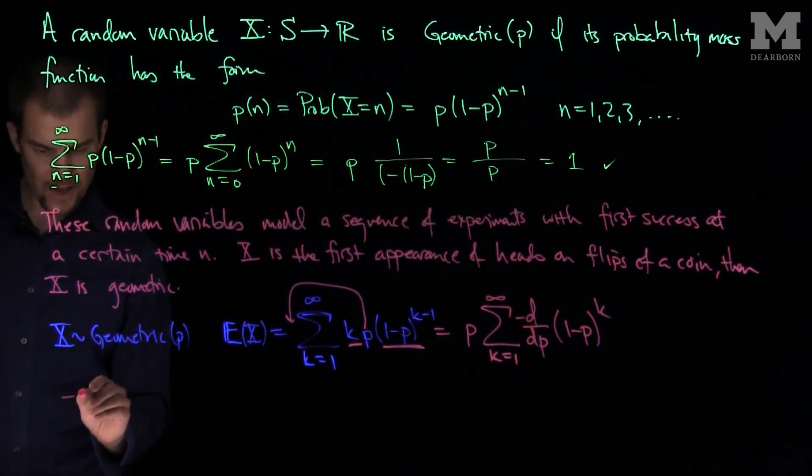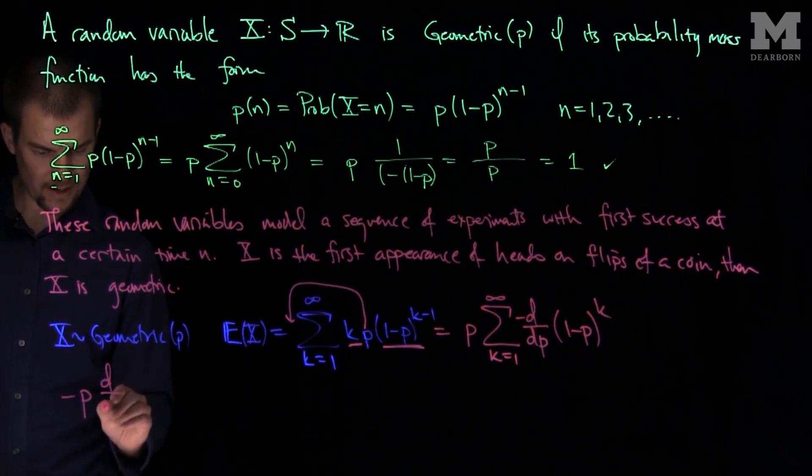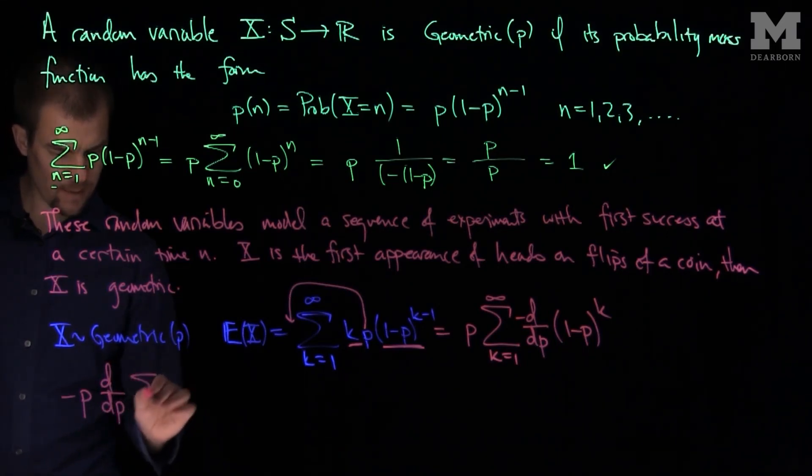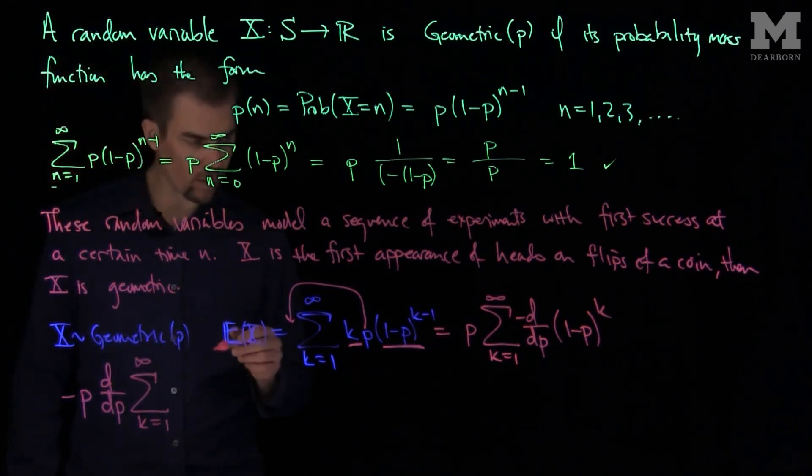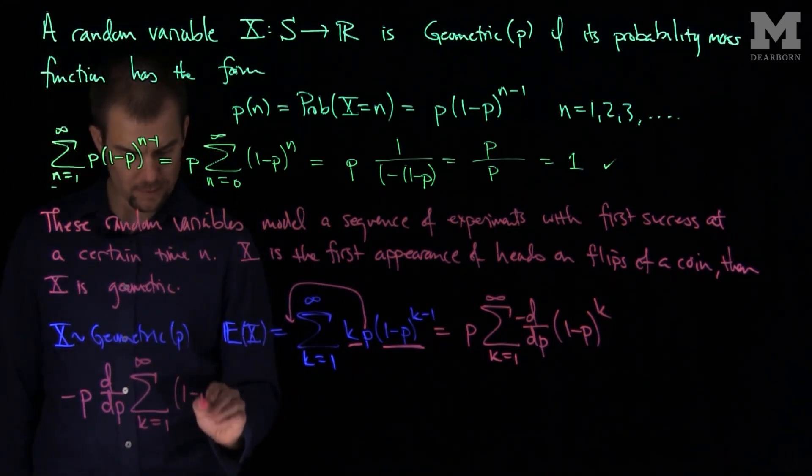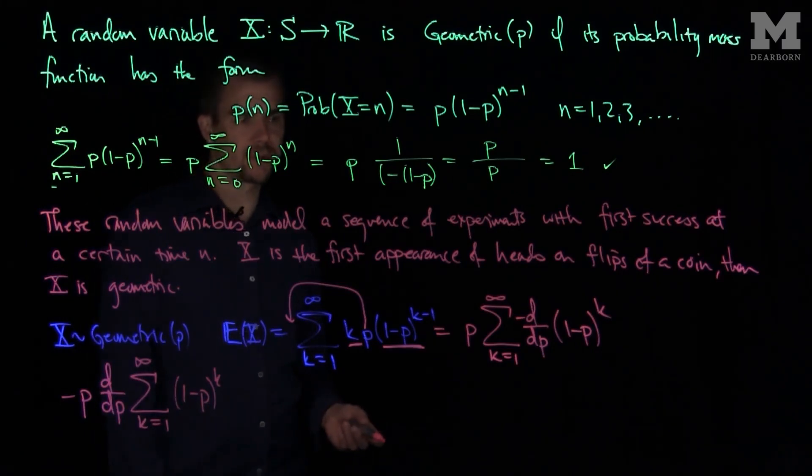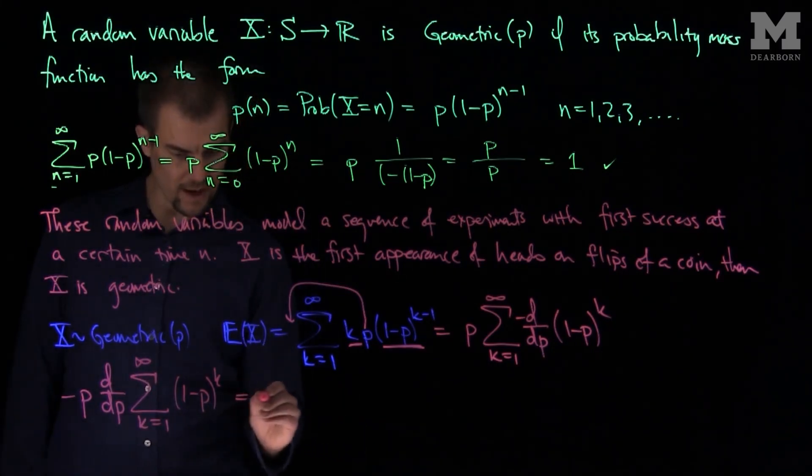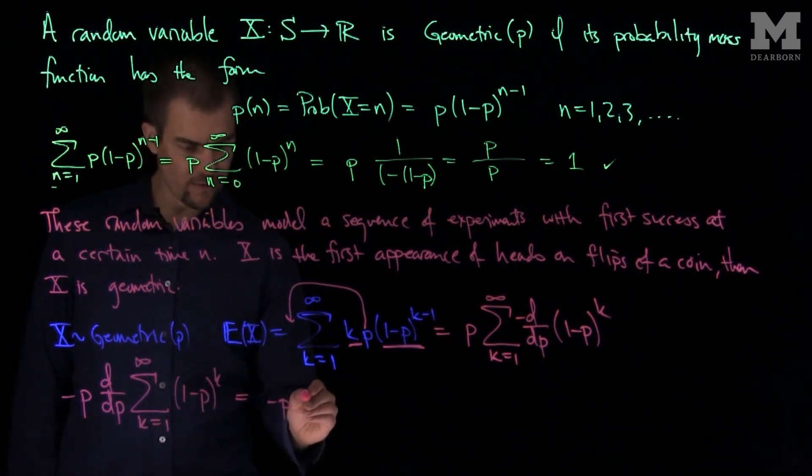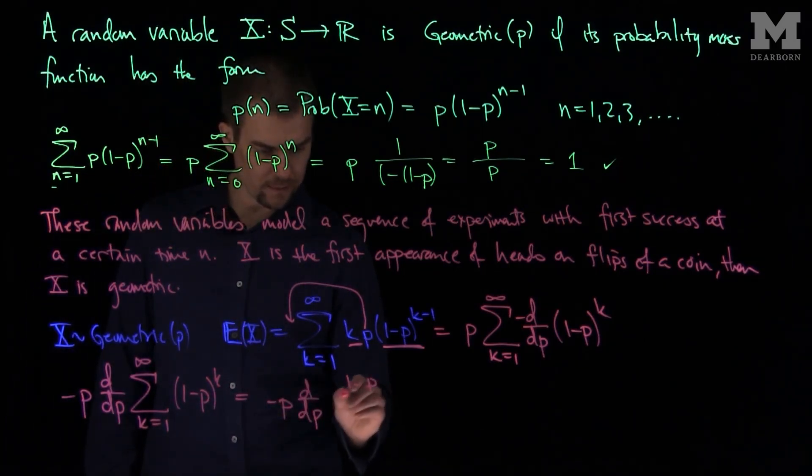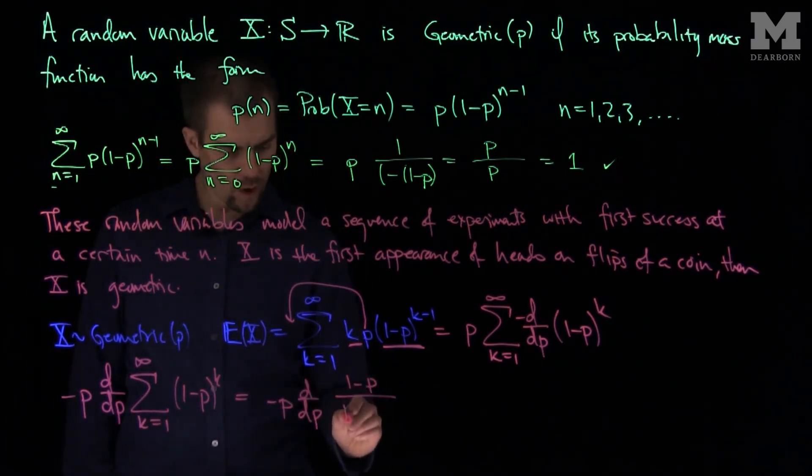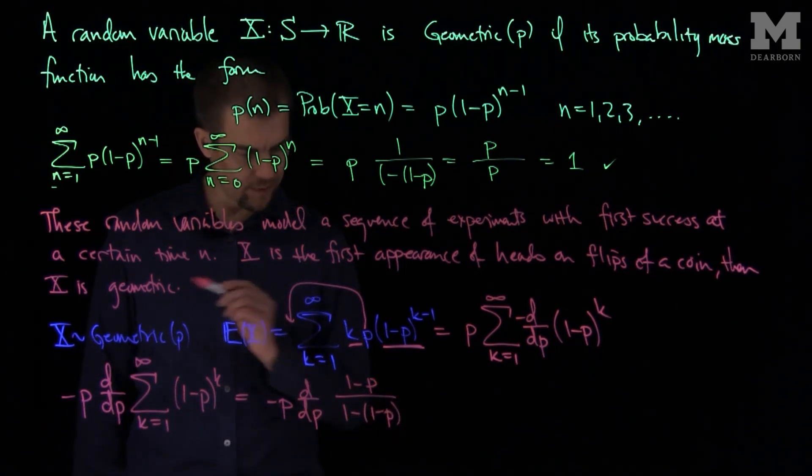And so we'll pull this derivative out of the sum. So this will be negative p, d by dp, of the sum k goes from 1 to infinity of (1-p) to the power k. And what this sum is, is negative p times the derivative with respect to p of (1-p) over (1 minus 1 over p), because it's a geometric series.